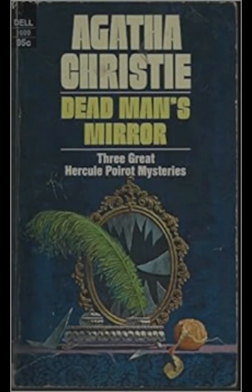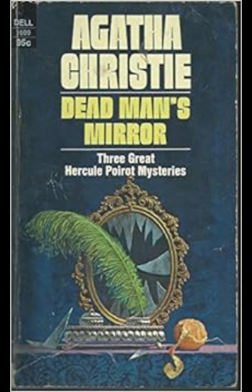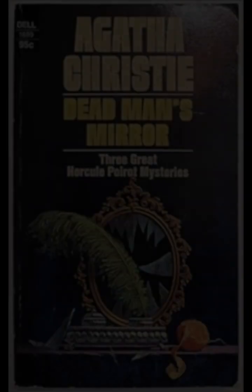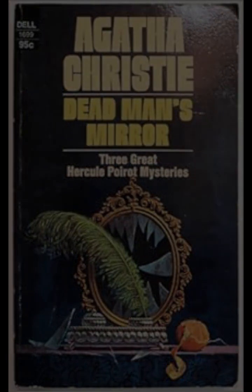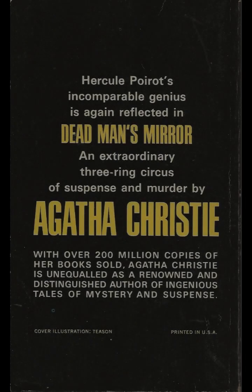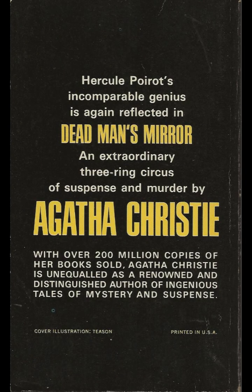In Dead Man's Mirror, Hercule Poirot faces a complex case that delves into the themes of pride, deception, and the lengths people will go to protect their secrets. The story begins with Poirot receiving a summons from the wealthy and imperious Sir Gervis Chevenix-Gore, who believes someone is trying to defraud him. Despite the peculiar nature of the invitation, Poirot accepts and arrives at Chevenix-Gore's estate only to find his host dead — apparently by suicide. However, Poirot quickly deduces that it is a case of murder.